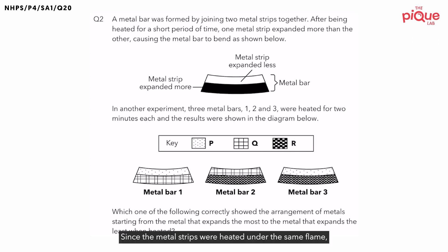Since the metal strips were heated under the same flame, the difference in the rate of expansion of the metal strips must be due to the heat conductivity of the materials. For the metal strip that expanded more, what can we conclude about the heat conductivity of the material? This means that the metal is a better conductor of heat, whereas the metal strip that expands less is a poorer conductor of heat.